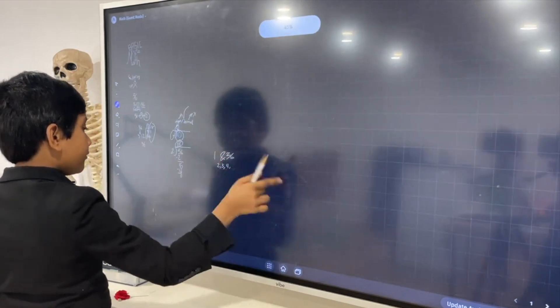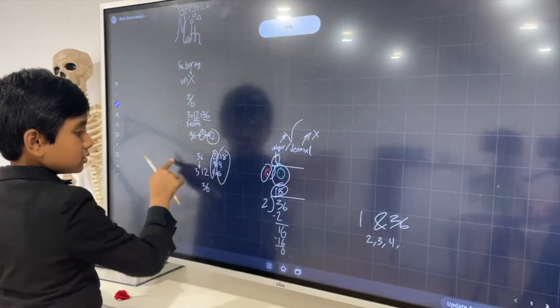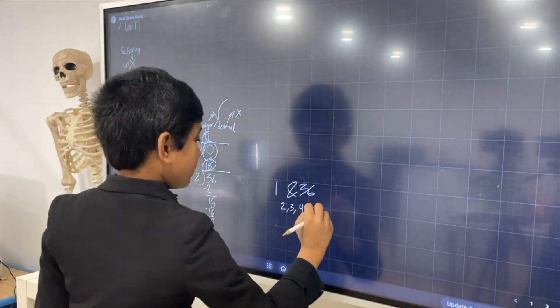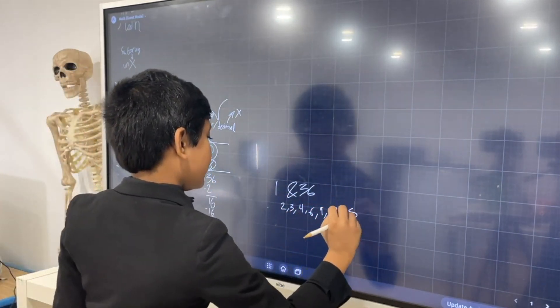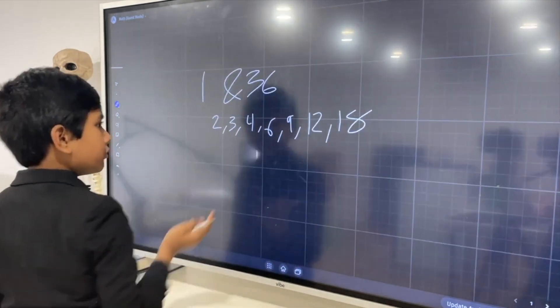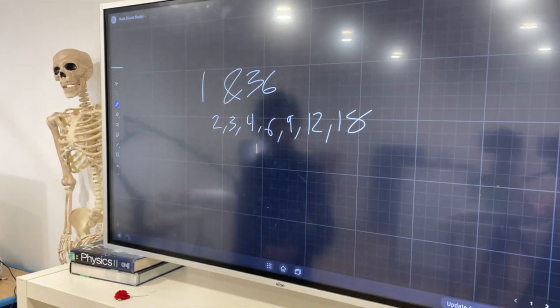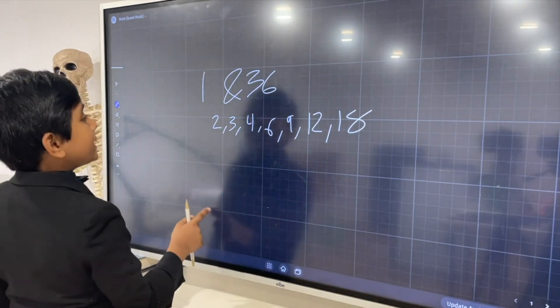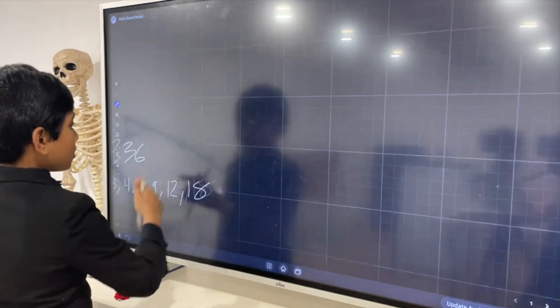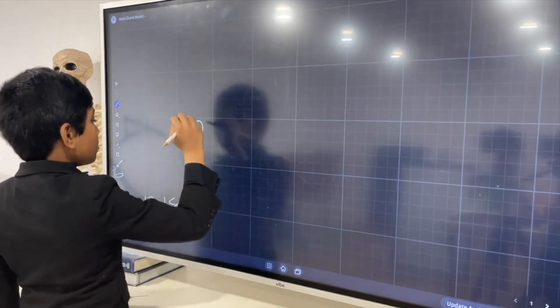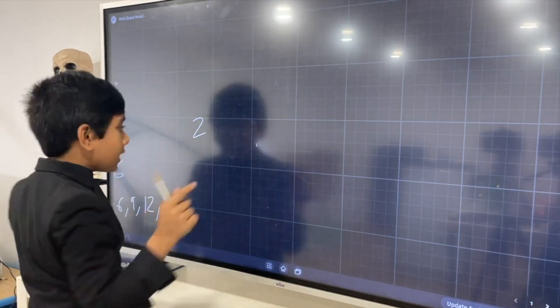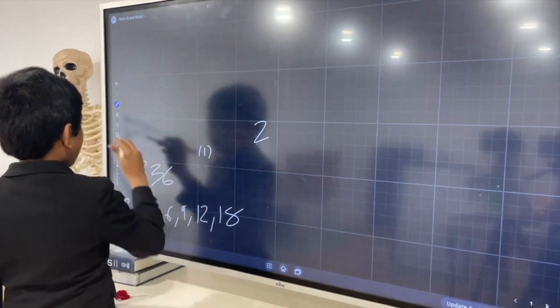We have 5, we have 6, we have 9, and we have 12, and we have 18. So, we already have a hefty amount of factors. Now, what are the numbers that we've tested that are less than 18, or less than half of the number? Because you have to remember that 2 is the smallest factor of any number that's not 1.